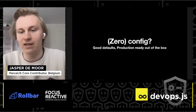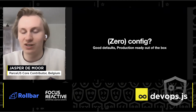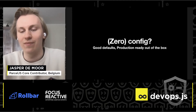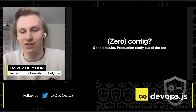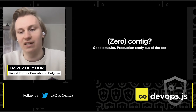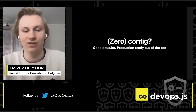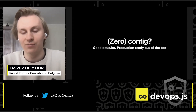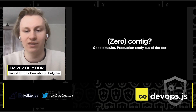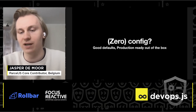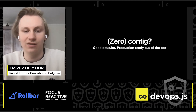And now you might be wondering, is it really zero config? Well, we actually have a config file, but we try to let you not configure it as much as possible. We try to have good defaults and be production ready out of the box. So you just create your application, and when you're ready, you can push it to production and everything will be optimized as it should be.